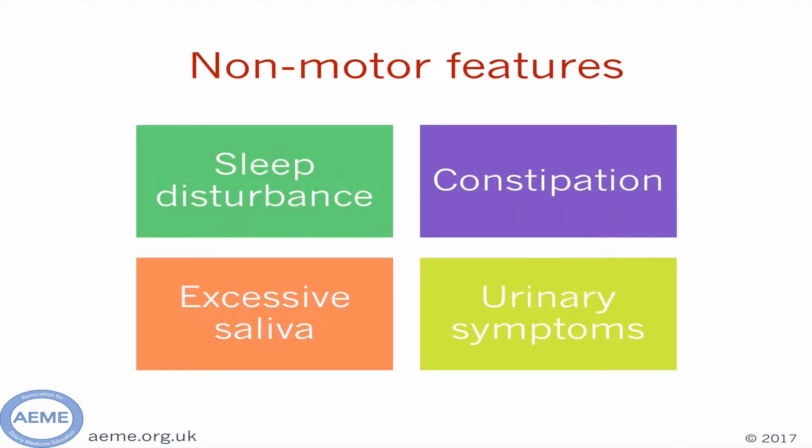Parkinson's disease also has a number of non-motor features. Many patients experience sleep disturbance. This can be rapid eye movement, or REM sleep disorder, in which patients act out their dreams or might describe hitting or kicking motions during sleep. Patients themselves may not be aware of this, so will not report it, but someone else in the house might have noticed. They may have symptoms of autonomic dysfunction, such as constipation, sweating abnormalities, and sexual dysfunction.